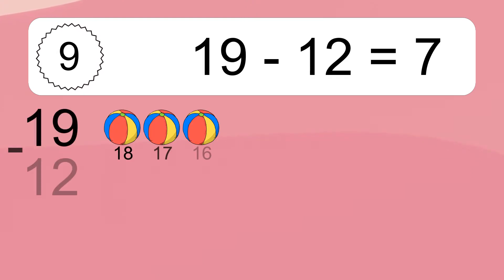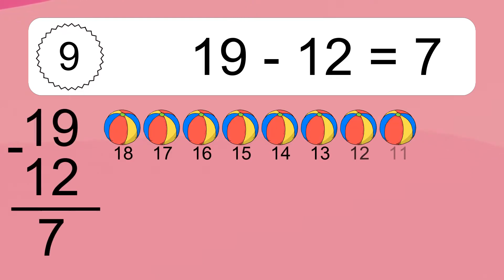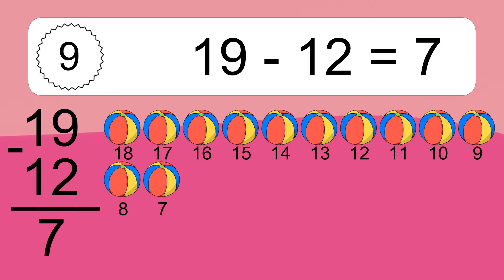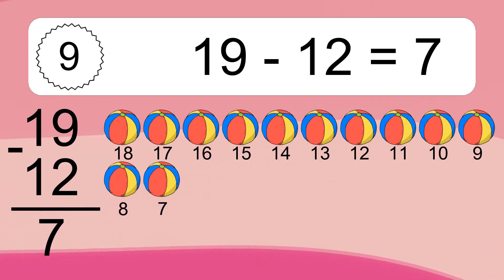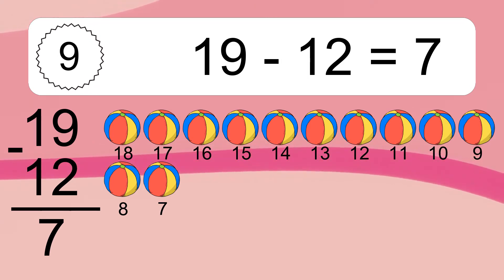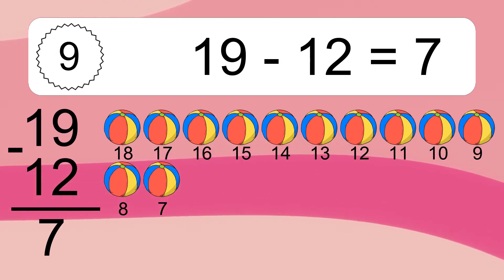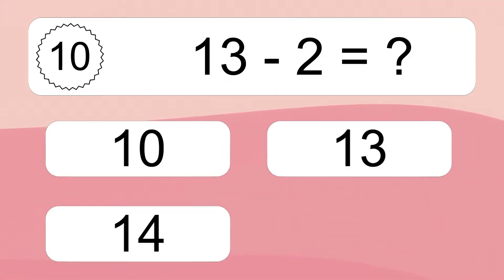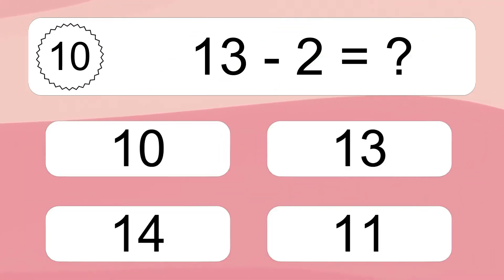19 minus 12 equals what? 19 minus 12 equals 7. Let's count it: 18, 17, 16, 15, 14, 13, 12, 11, 10, 9, 8, 7.